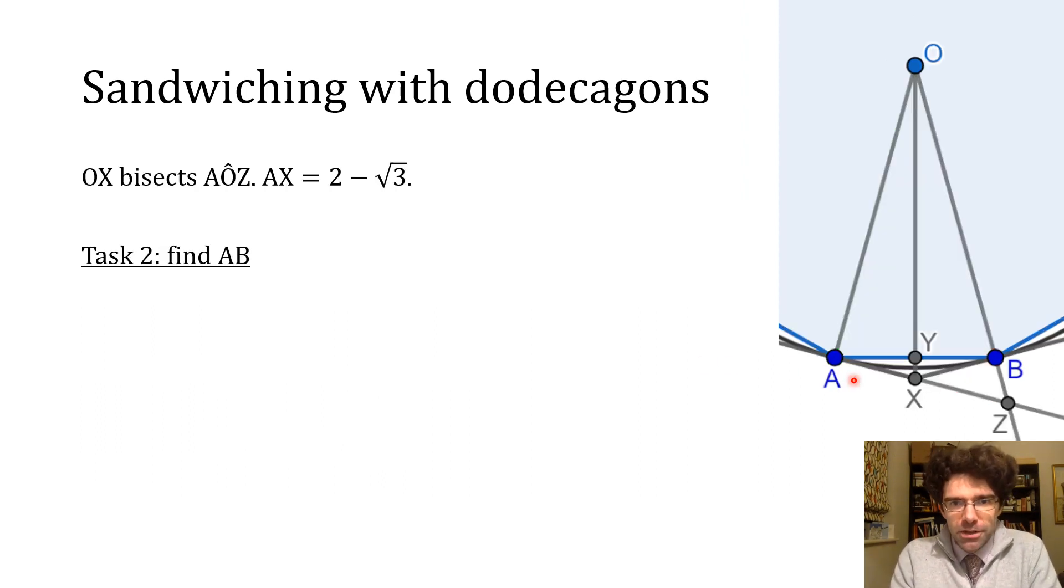So we're going to squeeze that knowledge about AX just a little bit further, and we've got OA and a right angle and AX, so it's just crying out for us to work out what OX is using Pythagoras theorem. And if we do that, it turns out that OX is the square root of 2 multiplied by the square root of 3 minus 1.